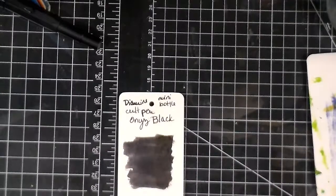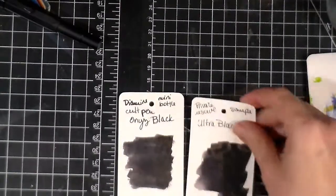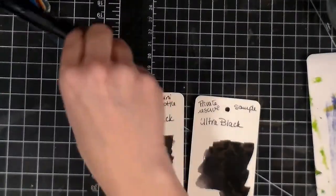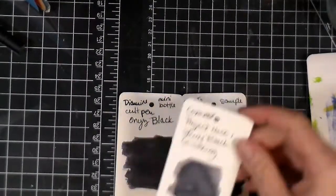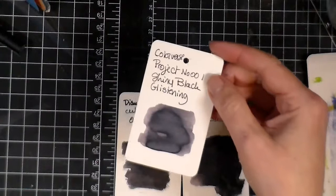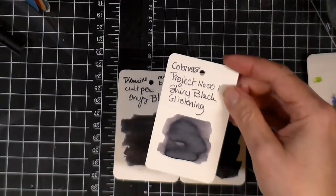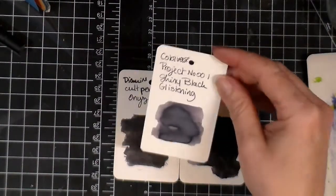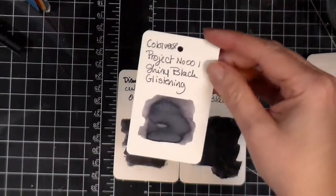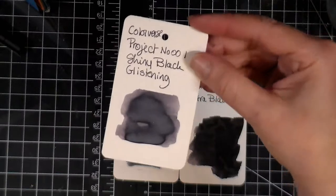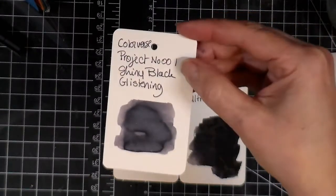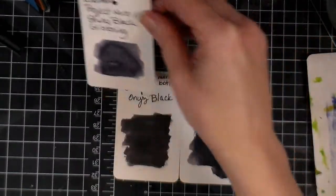So this is the Onyx Black. This is the Ultra Black that we played with, the Private Reserve one. And then this one I pulled out, but it's not the same. It's the Shiny Black Glistening from Colorverse. I got this one because of Manda. If you're going to have a black, be a shiny nice black like that.